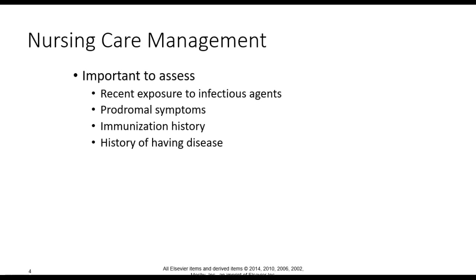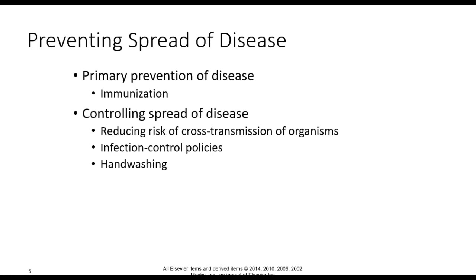It's important to assess recent exposure to infectious agents, prodromal symptoms — meaning the symptoms seen at the start of infection — immunization history, whether immunizations are up to date, and any history of having the disease. Primary prevention would be considered immunization, and we also consider controlling the spread of disease by reducing cross-transmission of organisms, infection control policies, and hand washing.